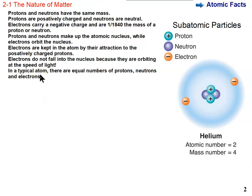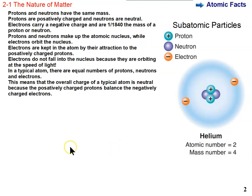In any typical atom, meaning stable and uncharged, there are equal numbers of protons, neutrons, and electrons. So you'll notice here in the helium atom, two protons, two neutrons, two electrons. That's a normal, stable, uncharged atom. This means the overall charge is neutral because the positive charged protons balance the negatively charged electrons.